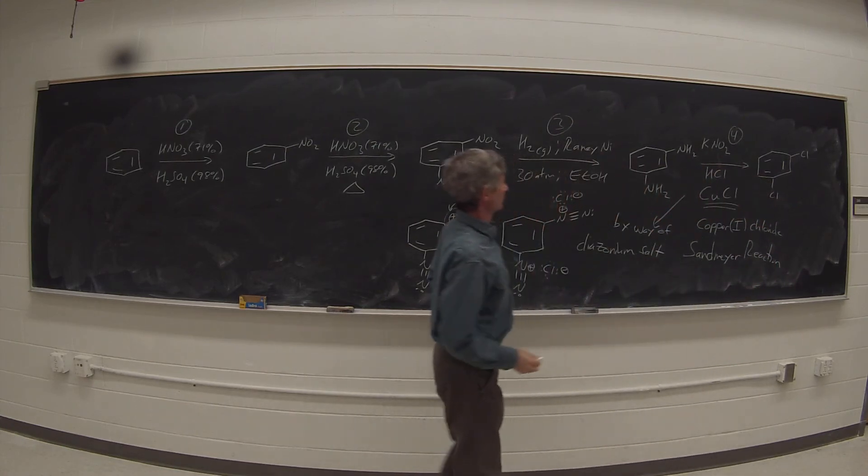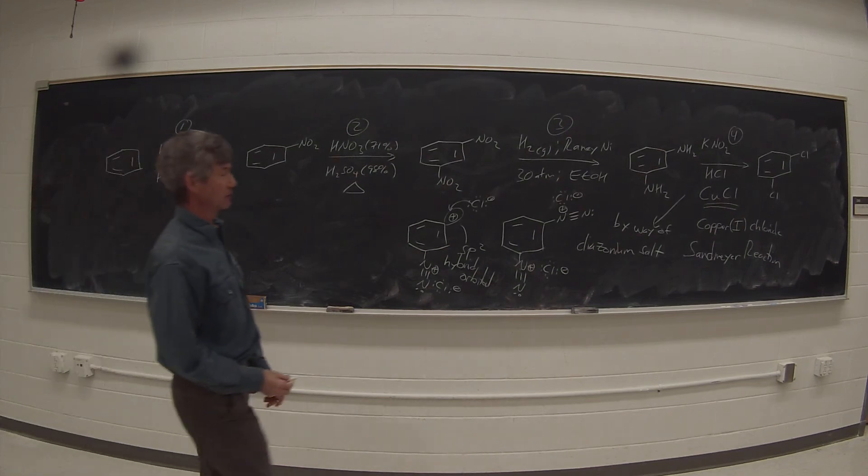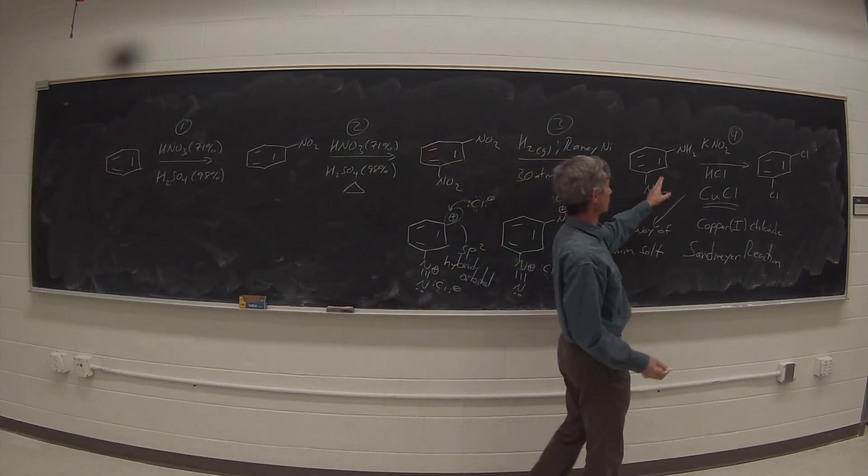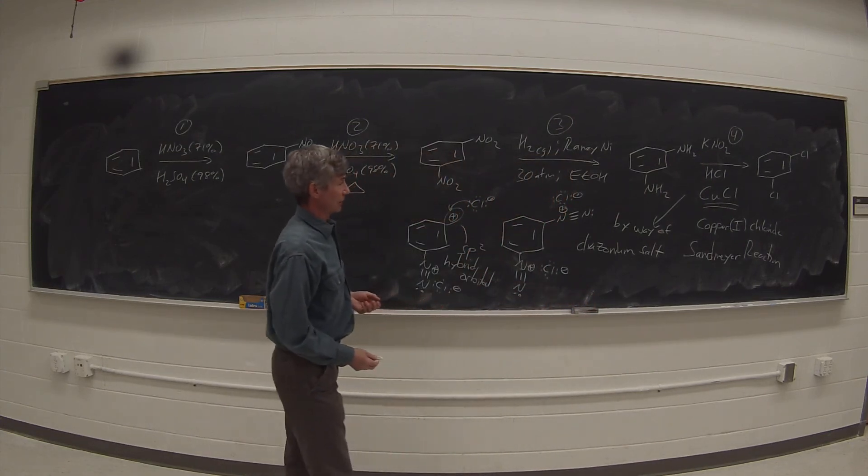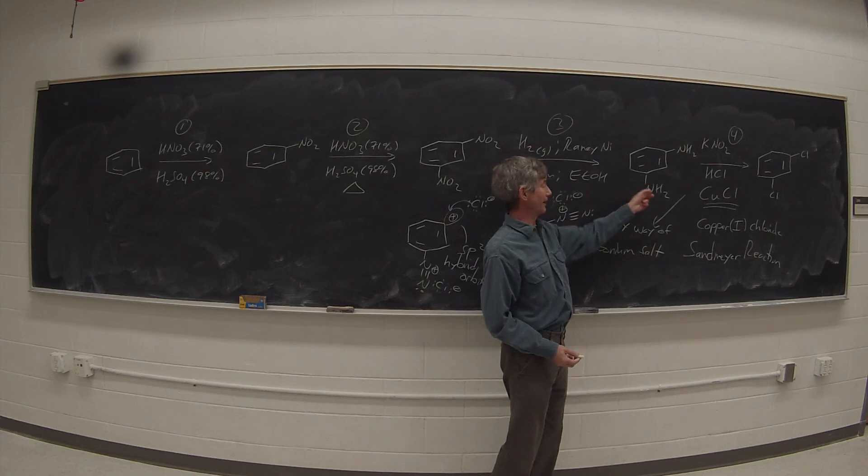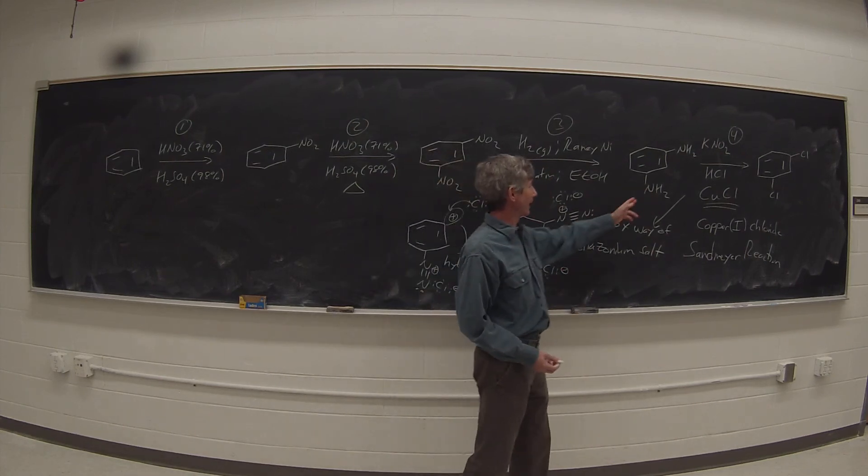To convert the amino group to just about anything else, the Sandmeyer reaction can also be used to convert the amino groups to bromides or cyanides, and analogies of the Sandmeyer reaction also allow you to convert the NH2 group into hydroxyl group, make a phenol, or into an iodide.